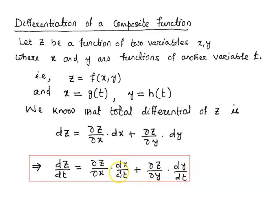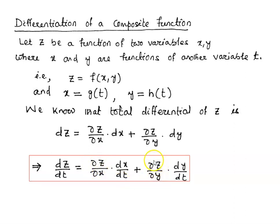Here dx by dt is an ordinary derivative because x is a function of one variable t. Similarly y is a function of one variable t. But del z by del x is a partial derivative because z is a function of two variables x and y, so we differentiate z partially with respect to x. Similarly we differentiate z partially with respect to y.